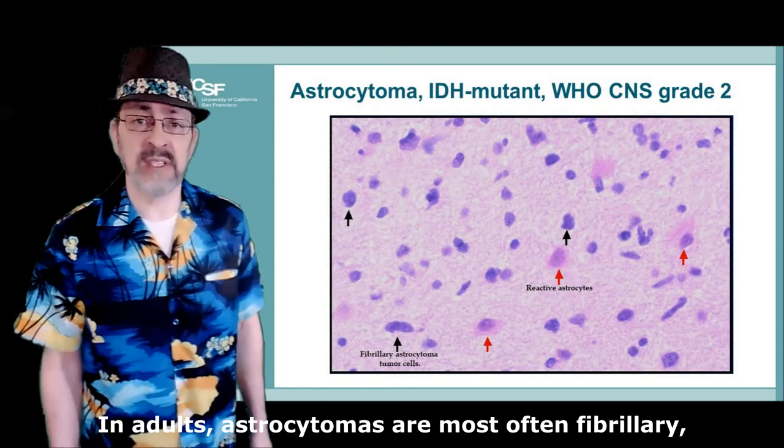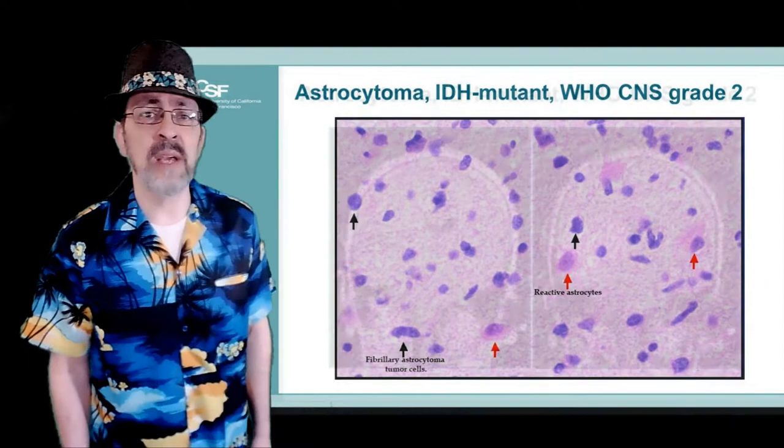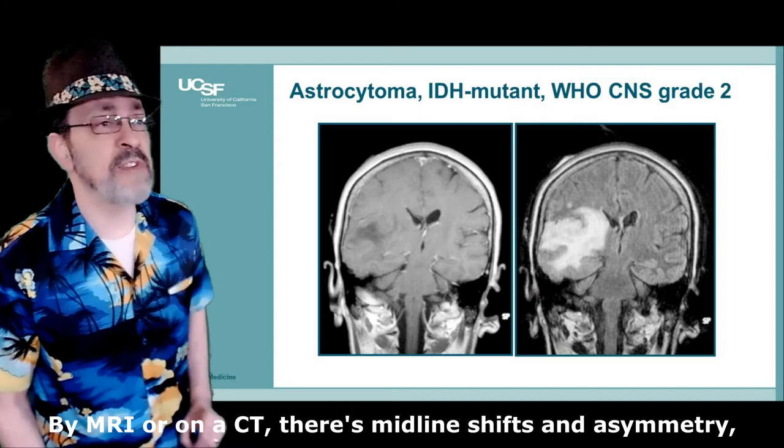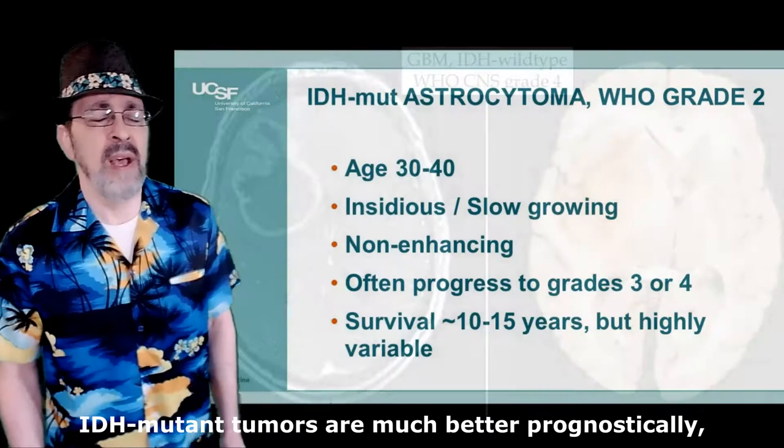In adults, astrocytomas are most often fibrillary. They infiltrate diffusely through the centrum semiovale. By MRI or on CT, there's midline shift and asymmetry. Rim enhancement is a perilous sign of glioblastoma most commonly.